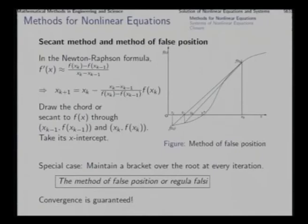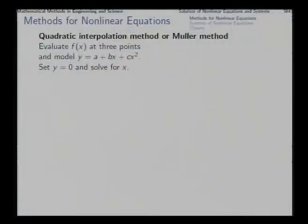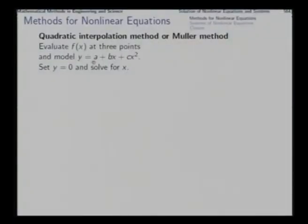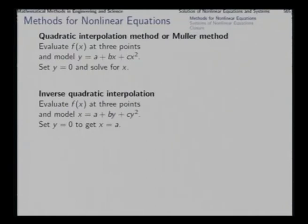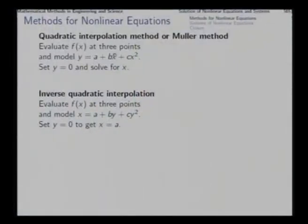Another method is quadratic interpolation or Muller's method. Take three points, evaluate the function, and fit a quadratic model through those three points. Solve for x where the quadratic is zero — that is the next point. Out of the four points now available, retain the three best and continue. A complication is that if the quadratic has two solutions, choosing between them is ambiguous, and if both are complex there is nothing in hand.